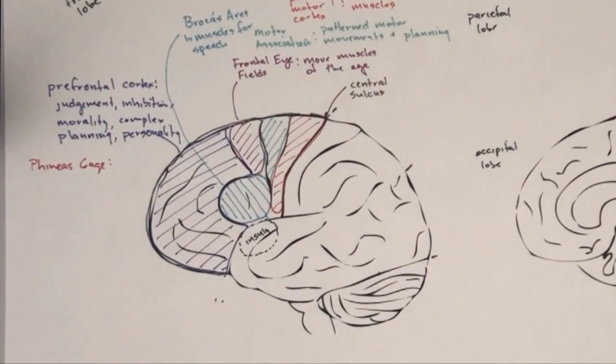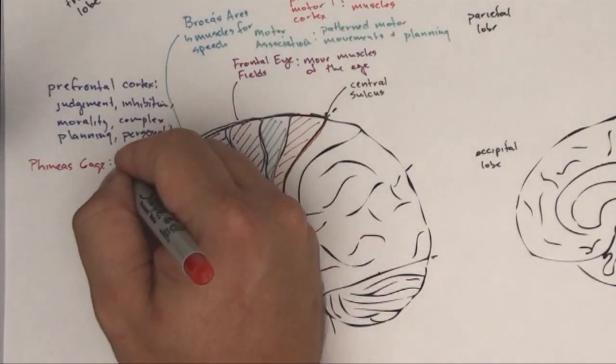And Phineas Gage was working on that railroad and he was tamping down an iron rod into a rock so that he could basically blow this rock up, this boulder up and get it out of the way so that the railroad could go through. But as he was tamping down the dynamite in the rock, it blew up and the rod that he was using to tamp went up through his skull. So, rod up through the frontal lobe, cause damage.